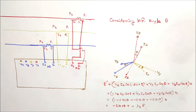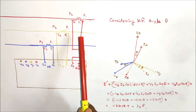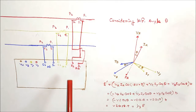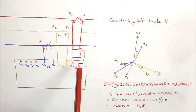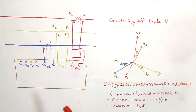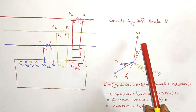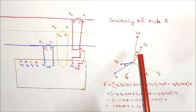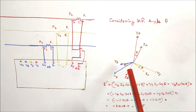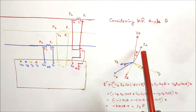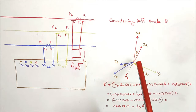Now consider the case when any phase CT polarity is reversed in the energy meter reading. Here the red phase CT polarity is reversed — that is, the S1 terminal of the CT secondary side is connected to the S2 terminal of the red phase coil of the energy meter, and the S1 terminal of the energy meter is connected to the S2 terminal of the CT.